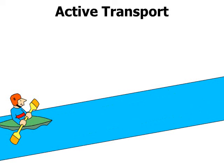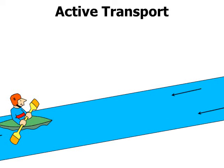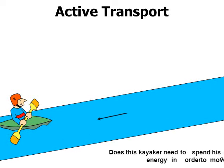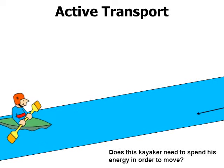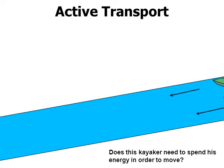If you've seen my previous videos on passive transport, we had a kayaker in a river facing the direction the current was traveling. In this case, the kayaker is going opposite to the current. This kayaker needs to spend energy — using the paddle and putting in a lot of muscle to fight the flow of the water. Active transport is kind of like a kayaker going upstream.